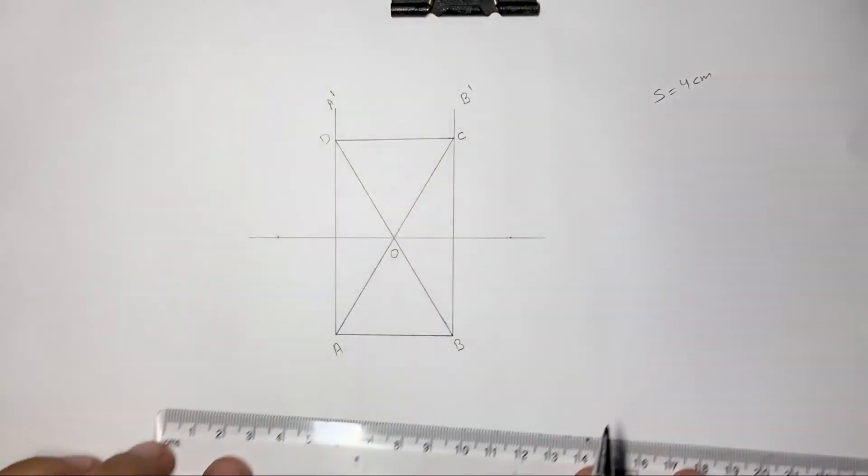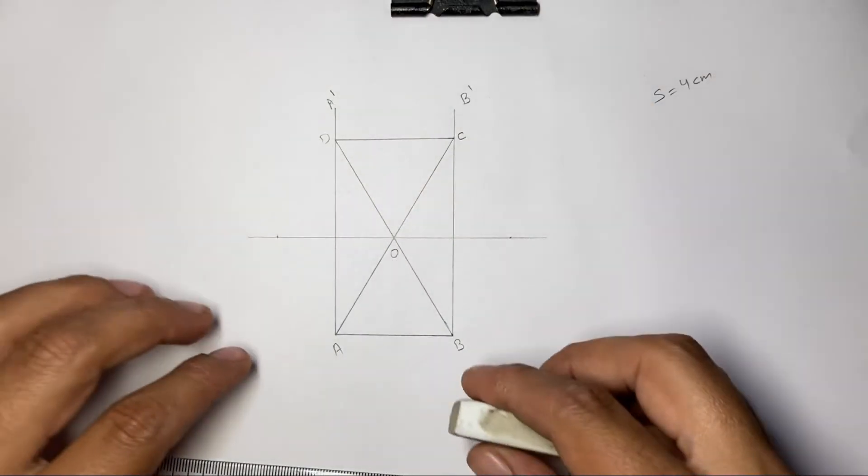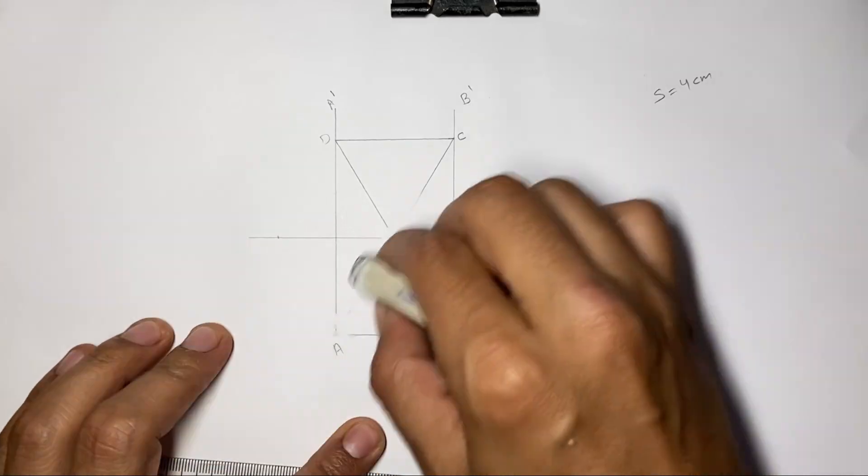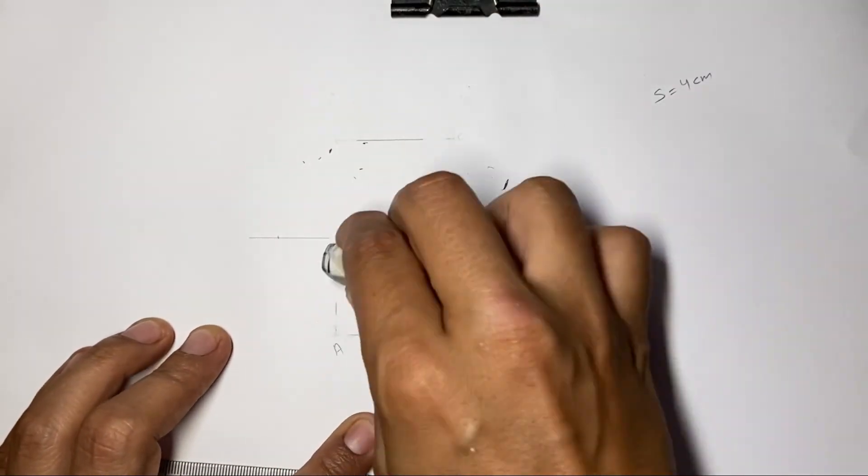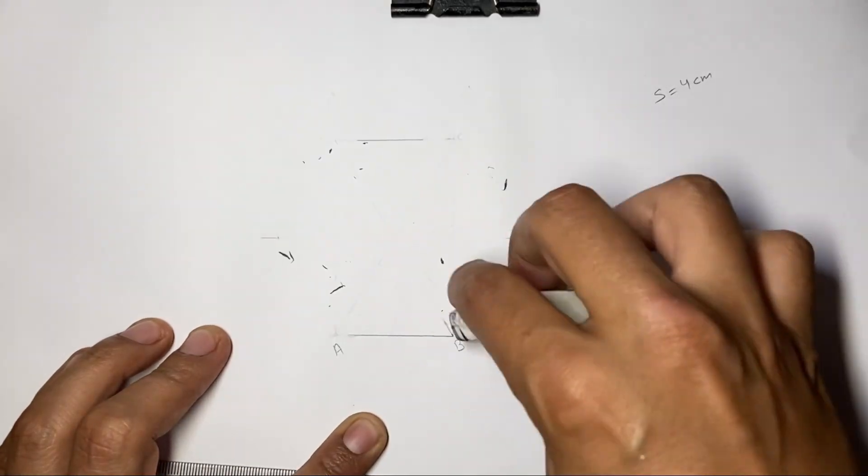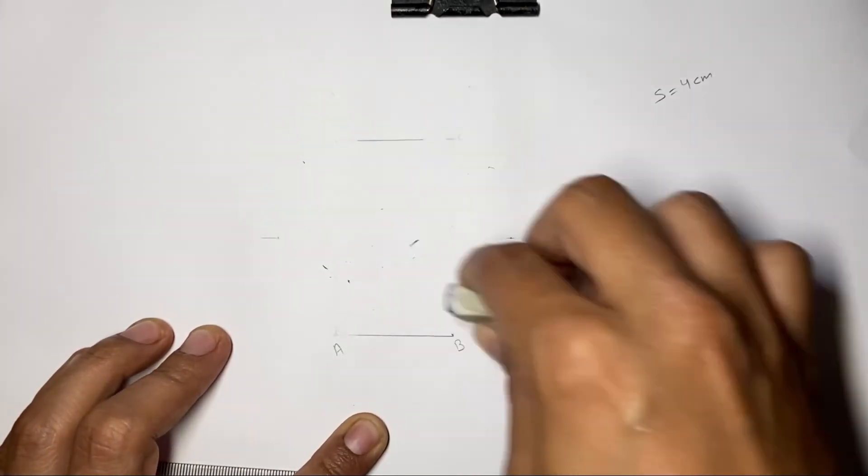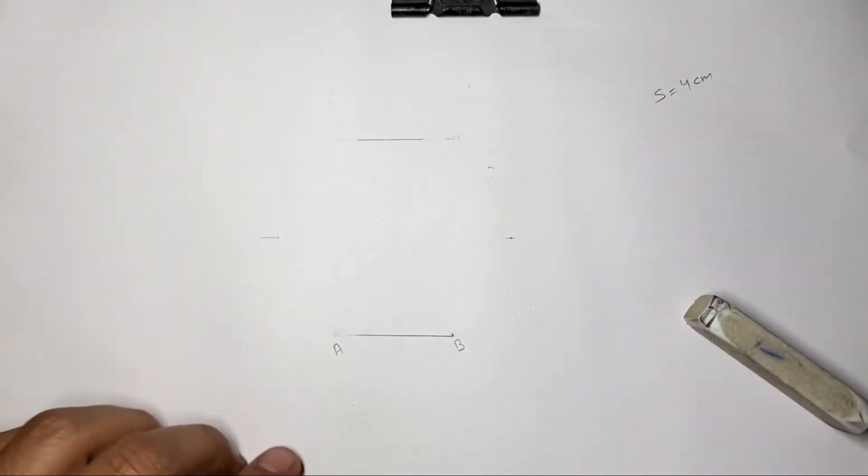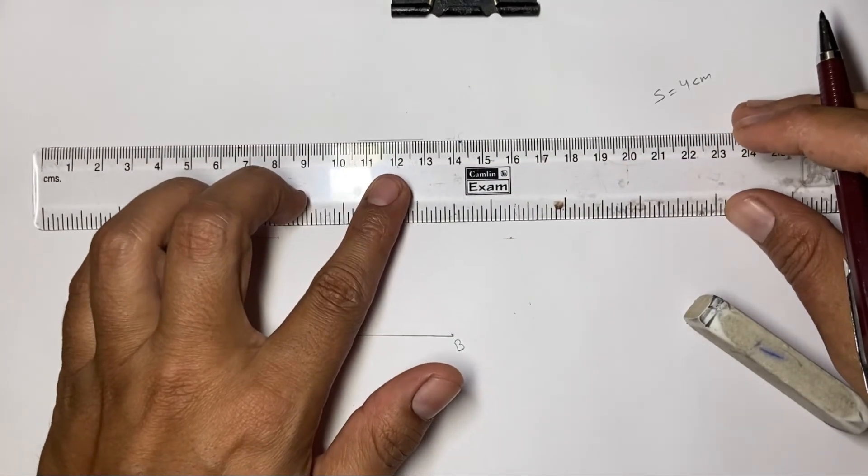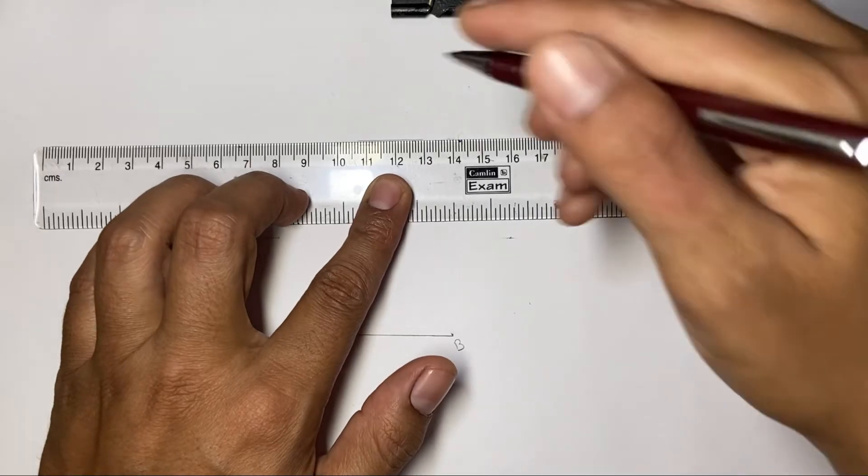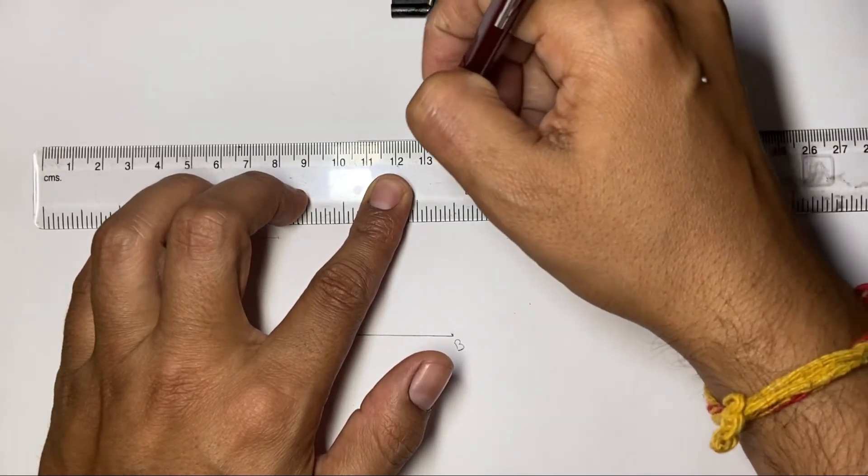Now let us erase those guidelines. We don't need them anymore. Now connect all those points. Let us draw the erased part of lines CB and C.